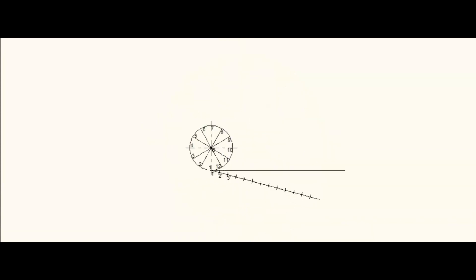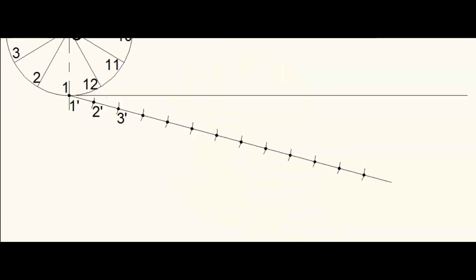Mark numbers on the divisional points of the line also. The last point should be joined with the end point of horizontal line. Parallel to this, draw lines through all other points.